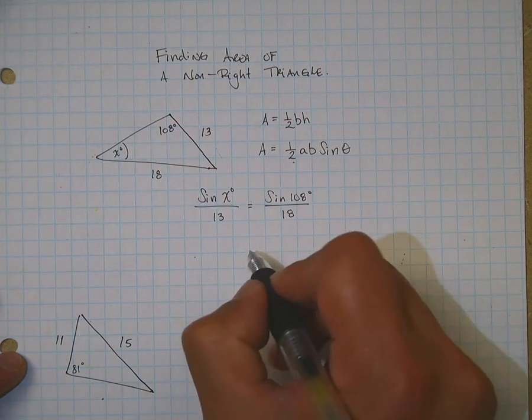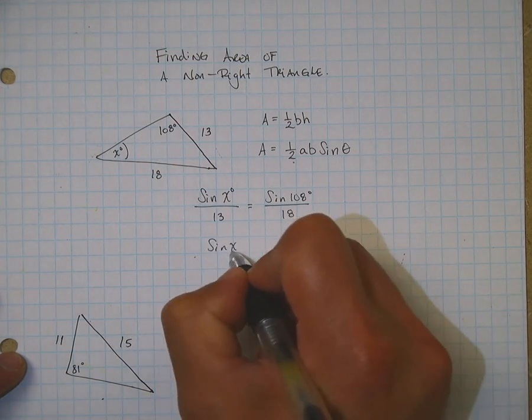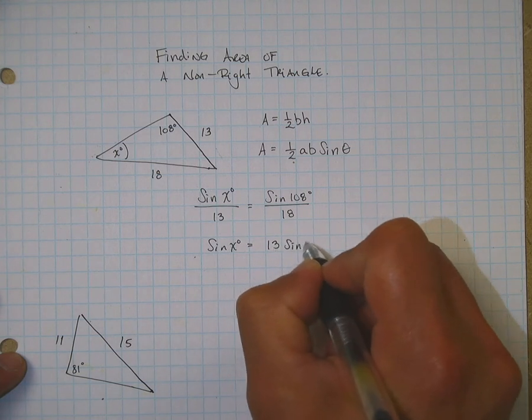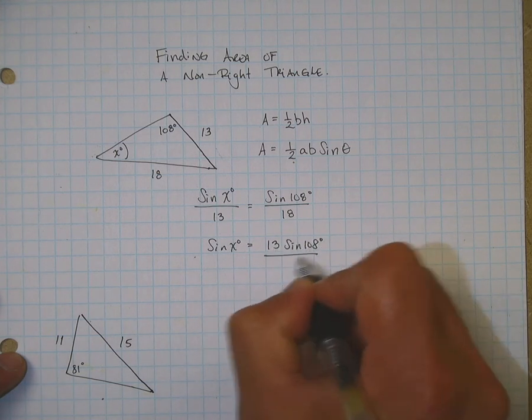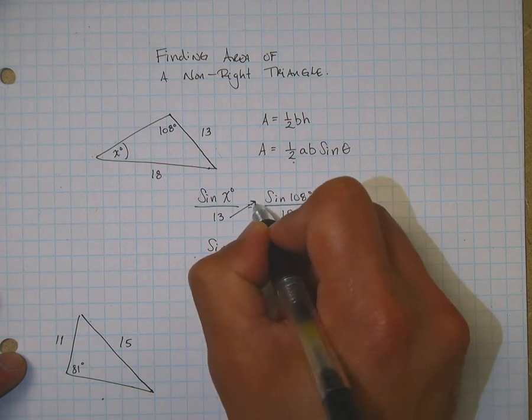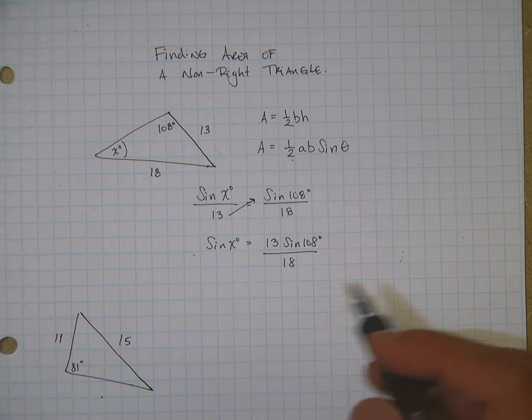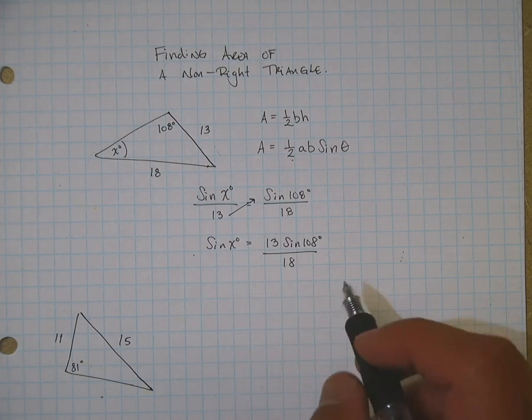From here, I can go ahead and cross-multiply. I'm going to get sine of x is equal to 13 sine of 108 divided by 18. I didn't cross-multiply the 18 because I want to isolate this sine of x here.